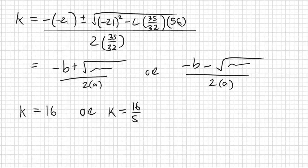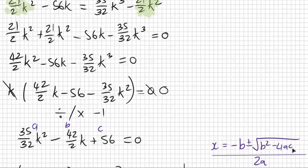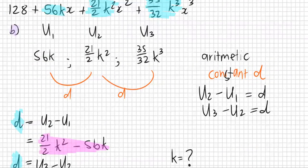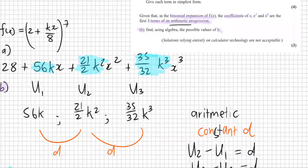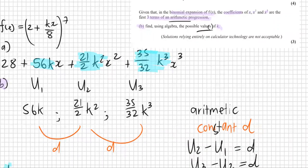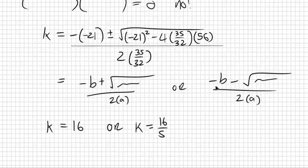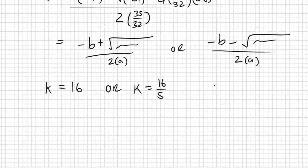Just make sure we answered the question correctly — it asked for the possible values of k. There were two values, so both are valid. That concludes question three.